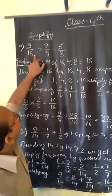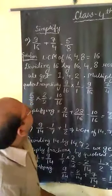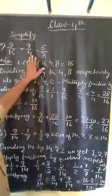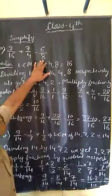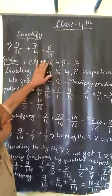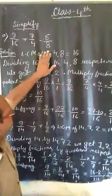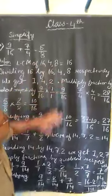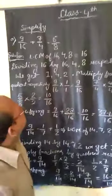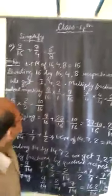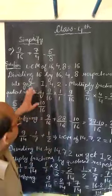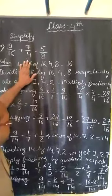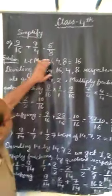The question is: 9 upon 16 plus 7 upon 4 minus 5 upon 8. First, we find the LCM of the denominators 16, 4, and 8. The sign — positive or negative — does not affect the LCM. So we take the LCM of 16, 4, and 8. We get 16 as the LCM of the denominators. After obtaining the LCM, we find equivalent fractions — like fractions — all having 16 as the denominator.